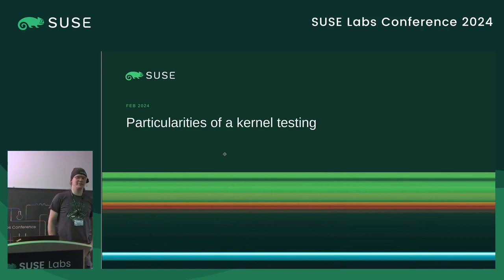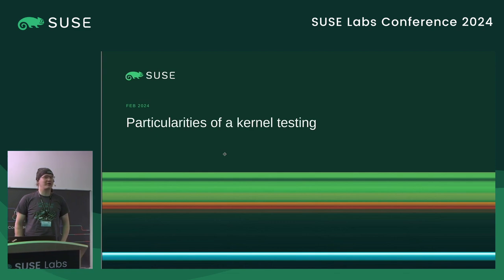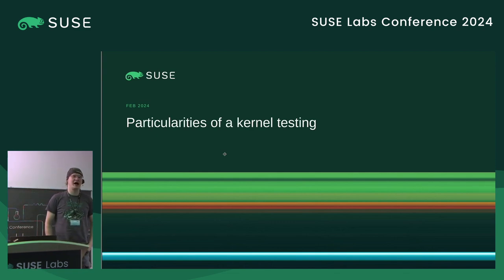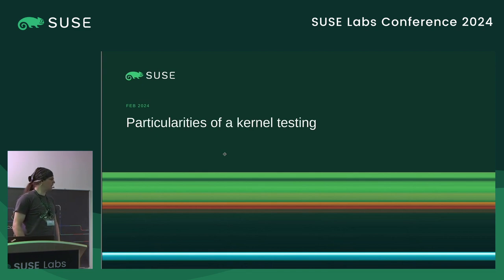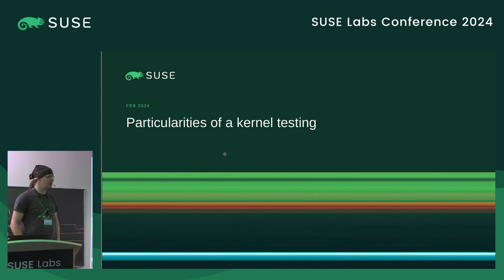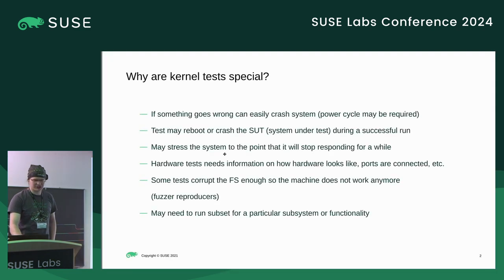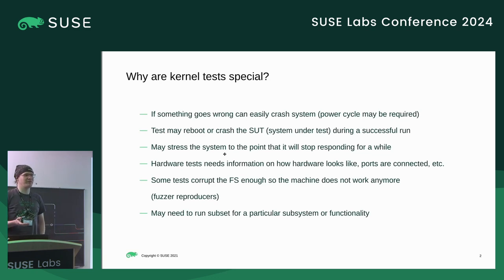Hello and welcome. This talk will try to summarize the interesting problems we stumbled upon during our kernel testing for the last 10 years, and then describe the solutions we either developed or are trying to build. The first thing is: why do we need something special for the kernel? The reason is that kernel test cases are special in several ways. If something goes wrong, it can easily crash the system — that's kind of obvious.